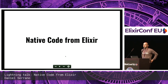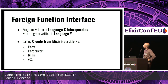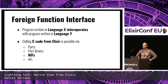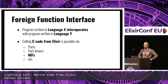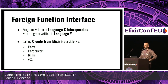I'm going to be talking about native code from Elixir. Some of you may be familiar with the concept of foreign function interfaces — a mechanism whereby you can call a programming language from another one. You can call C code from Elixir using NIFs, among other things like ports and port drivers, but I'm going to be focusing on NIFs in this talk.